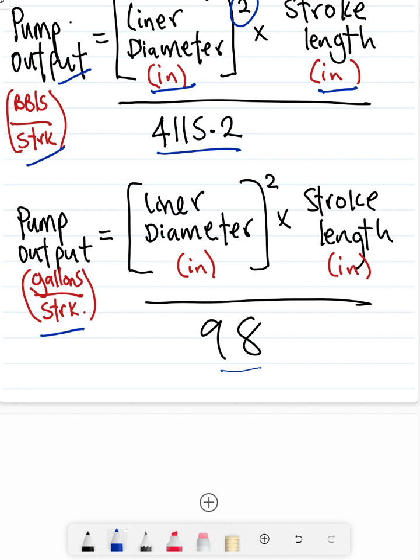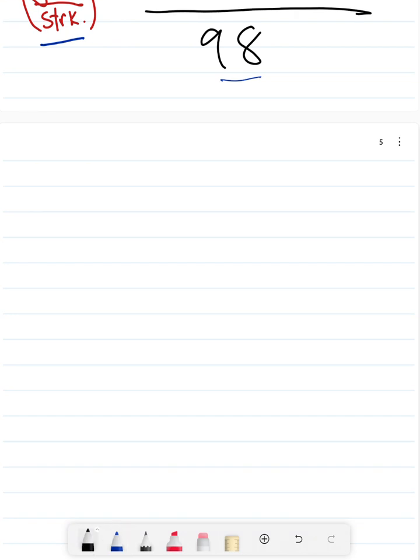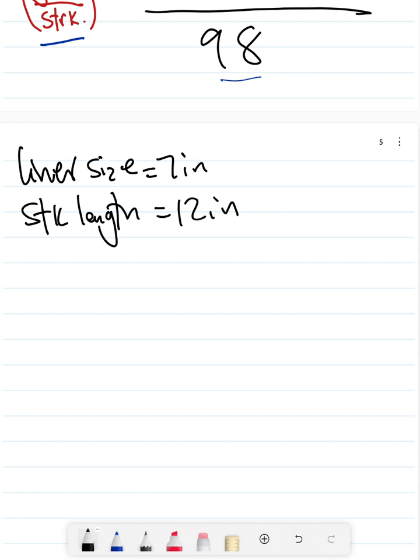Let's take a quick calculation to address everything we've learned. Say, for example, a liner size is 7 inches and the stroke length is 12 inches.